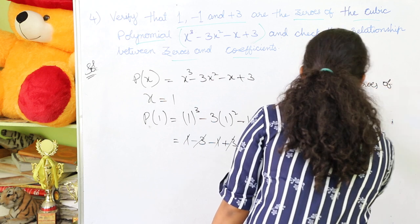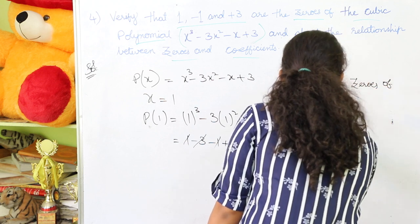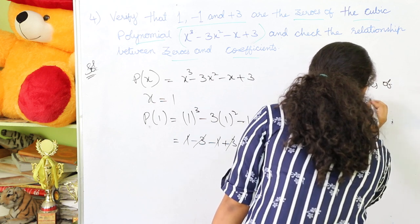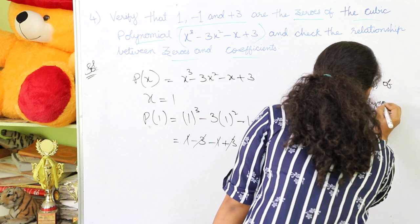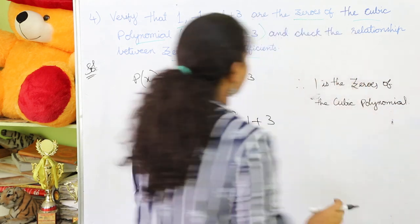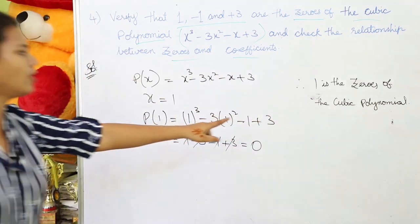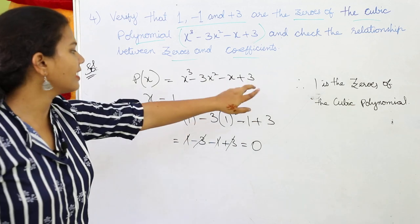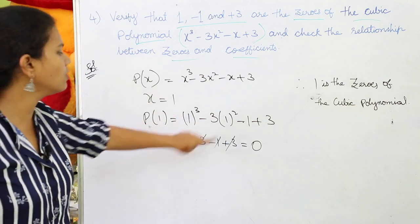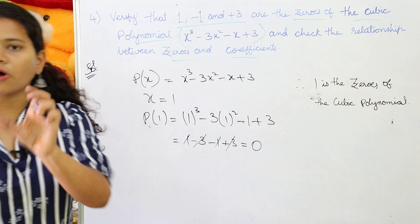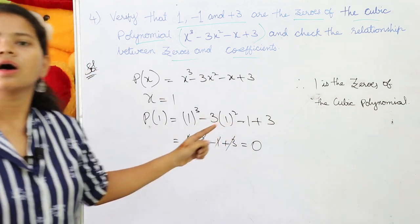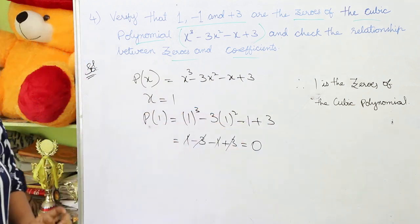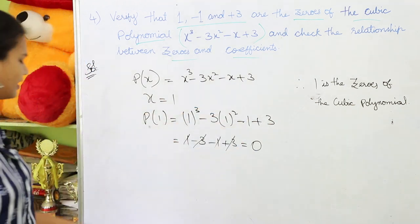Since substituting x = 1 into the polynomial gives p(1) = 0, therefore 1 is confirmed as a zero of the given cubic polynomial.